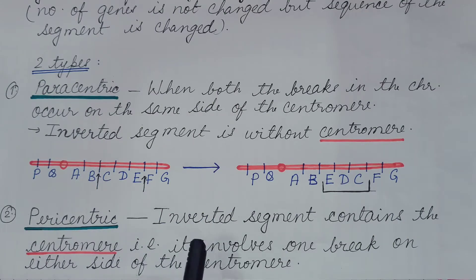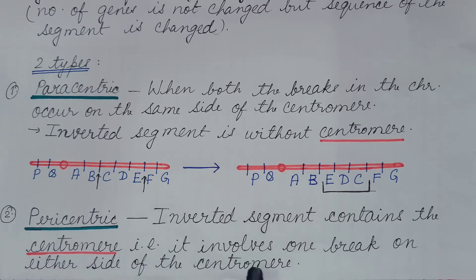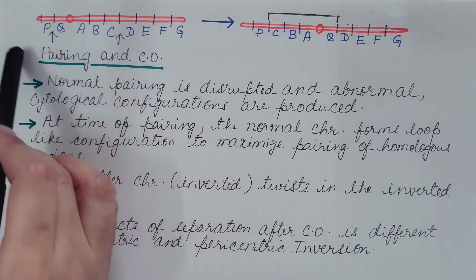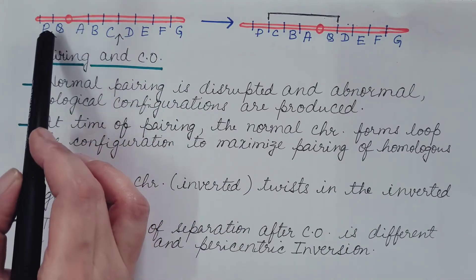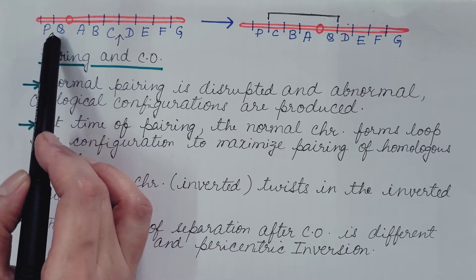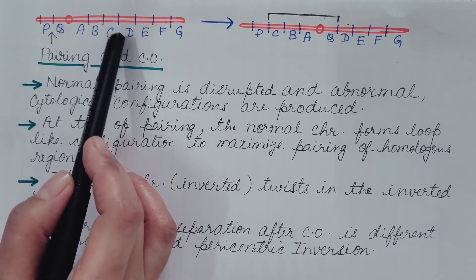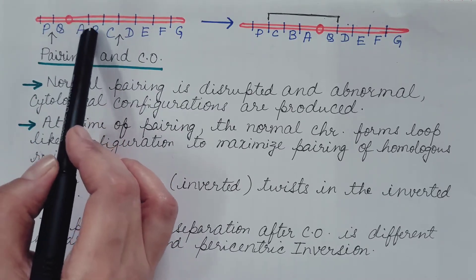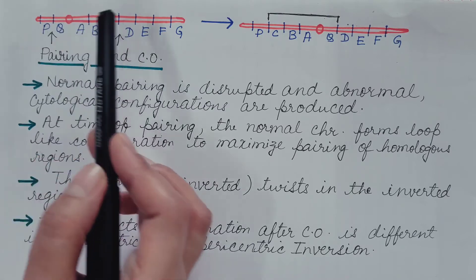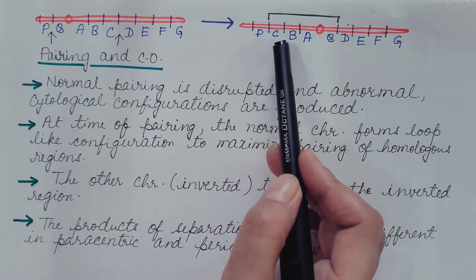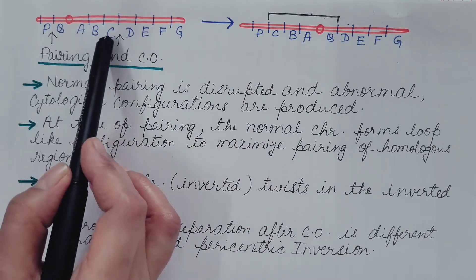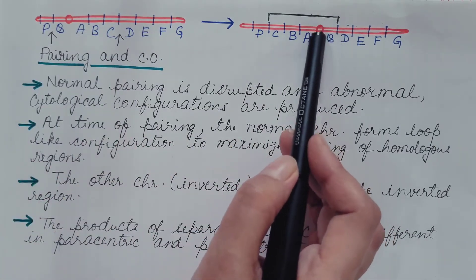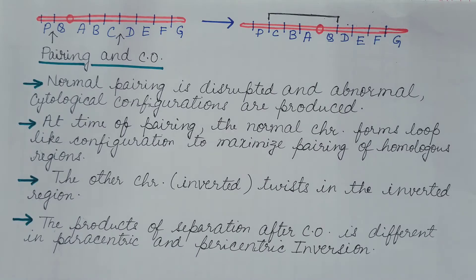Second is pericentric inversion. The inverted segment contains the centromere — that is, it involves one break on either side of the centromere. One break is on the left side of the centromere and the other on the right side, so the segment which is inverted includes the centromere. It rotates by 180 degrees and rejoins; the sequence becomes CBAQ instead of QABC. This is known as pericentric inversion.